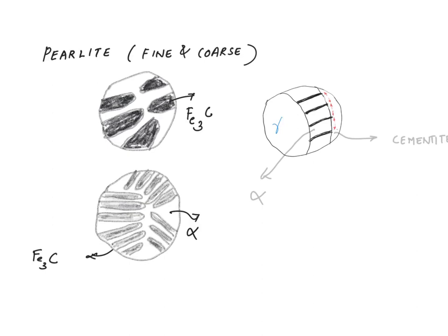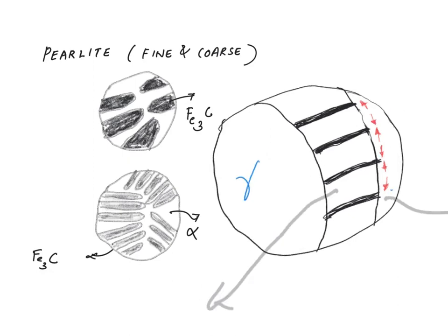So carbon can actually diffuse — and this is how I can show you here — this is how the diffusion occurs. This is the gamma austenite and the reaction is progressing in that direction. Carbon atoms diffuse into the cementite region. This is the cementite region and this is the alpha ferrite region. Carbon is diffusing towards the carbon-rich area, the region where carbon content should be high. That is how the pearlite microstructure is formed.